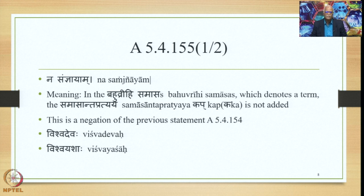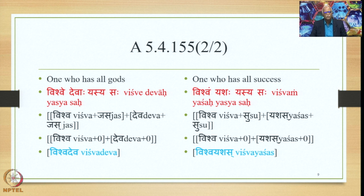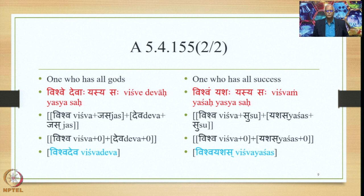The examples are Vishwadevaha and Vishwayashaha. For the first: to convey the meaning 'one who has all Gods,' the Laukika Vigraha is Vishwadevayasyasaha. The Samasa is affected by the Sutra Anekam Anyavadarthe. The Alaukika Vigraha is Vishwa plus Jasa plus Deva plus Jasa. Then Pratyavadika Saudhnyaya takes place, and because the Sutra 5.4.155 applies, the Samasanta Pratyaya Kap is not added. Supodhatup Pratyavadika Yoho applies and we get Vishwa plus 0 plus Deva plus 0, yielding the form Vishwadeva.